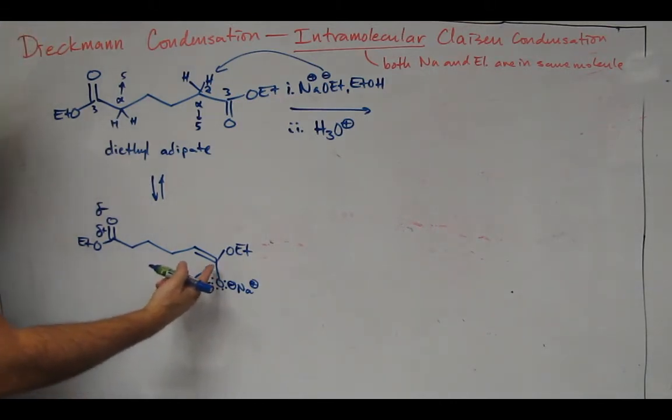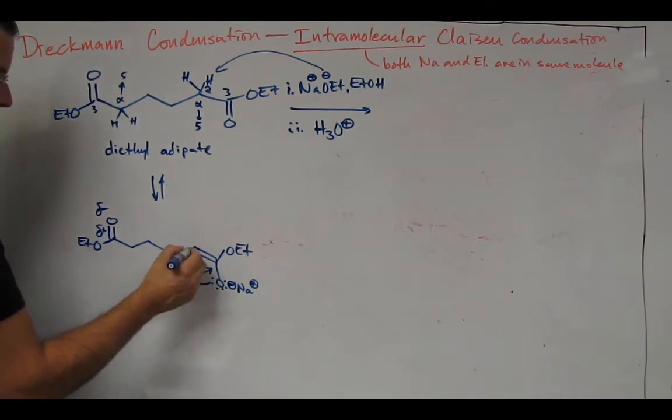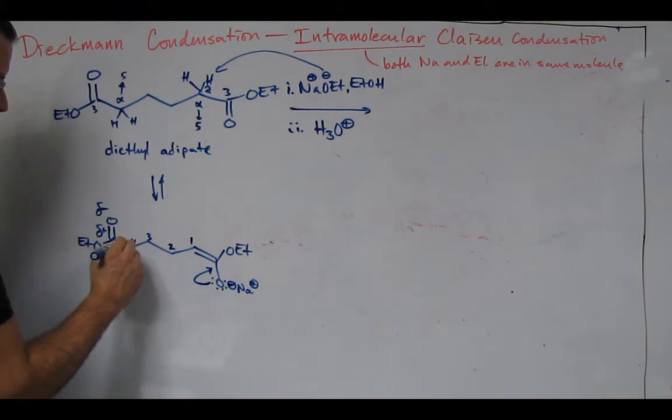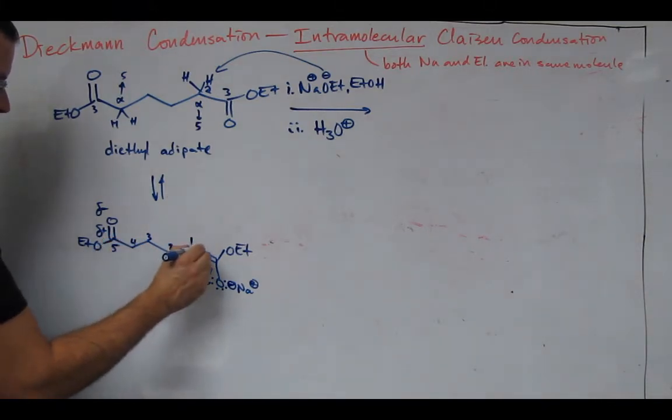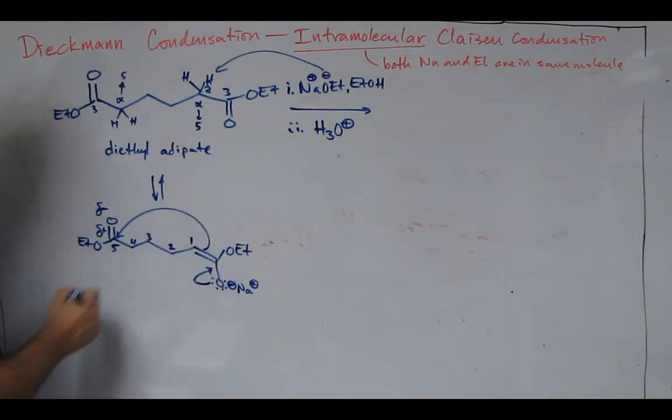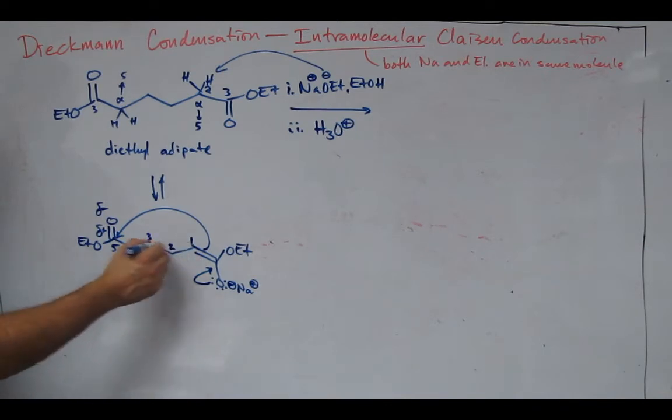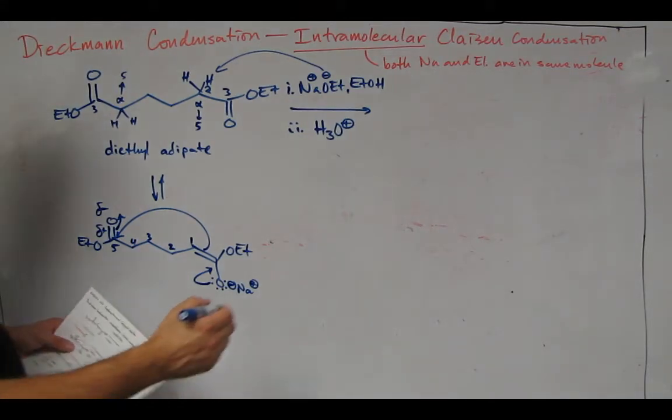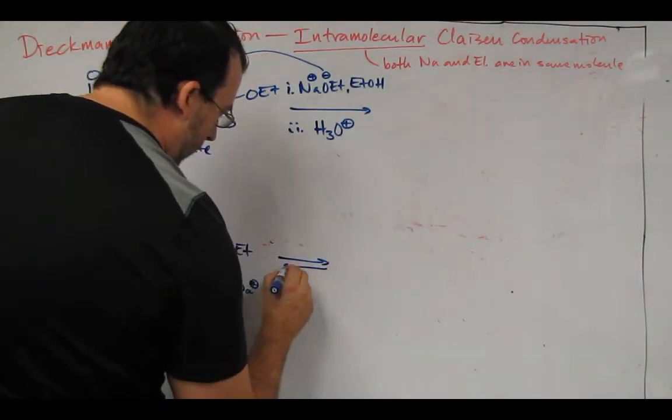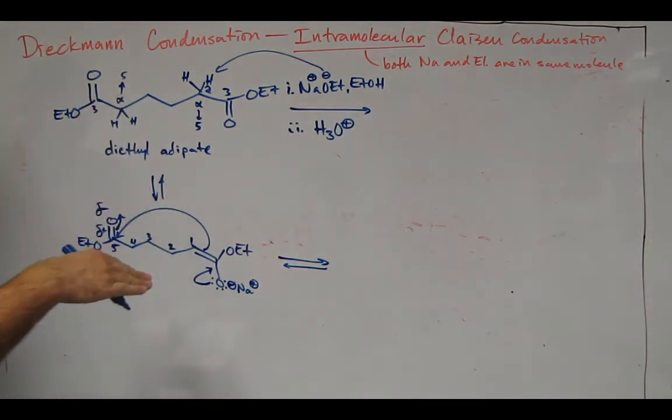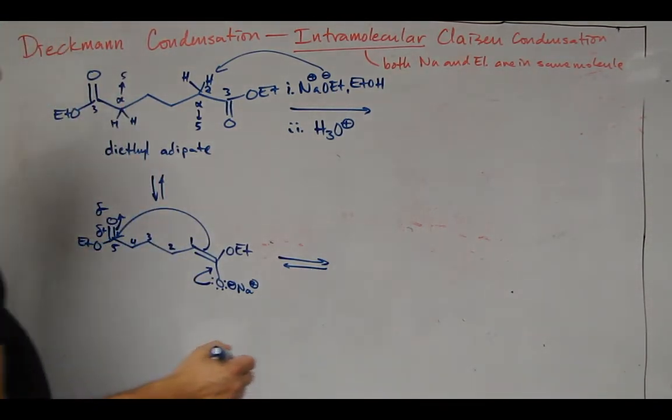So this will come back down. The alpha carbon is now the nucleophile. So let's do a count. One, two, three, four, five. Attack from this carbon to this carbon. Electrons then go on to oxygen. So we're forming a five-membered ring. Remember this is the nucleophilic acyl substitution at this point.